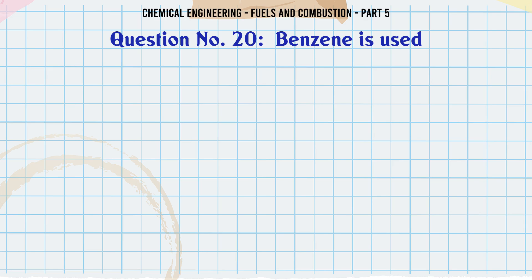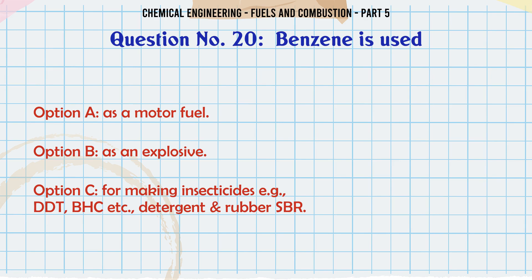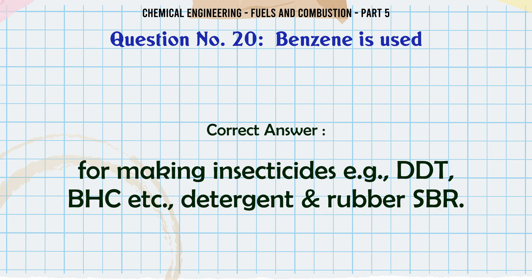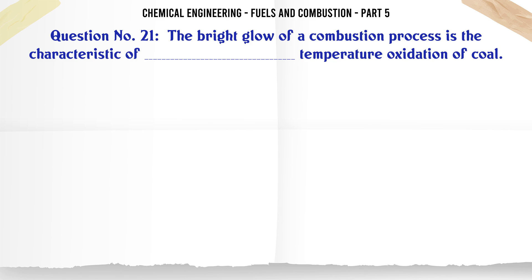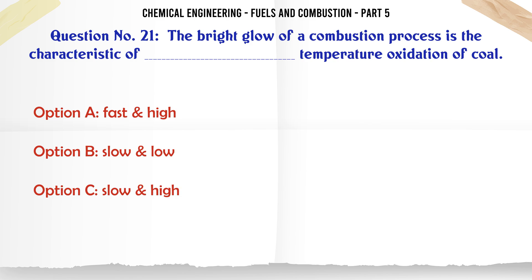Benzene is used: A. As a motor fuel. B. As an explosive. C. For making insecticides e.g. DDT, BHC, detergent, rubber SBR, etc. D. As a perfume. The correct answer is for making insecticides e.g. DDT, BHC, detergent, rubber SBR.